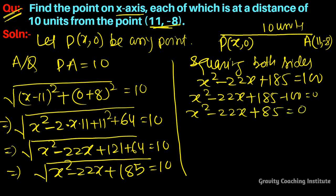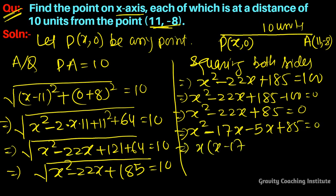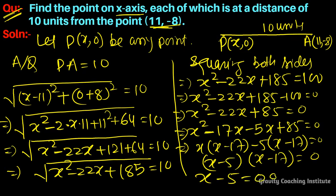x² - 22x + 185 = 100. So x² - 22x + 85 = 0. Now we'll split the middle term by factoring: (x - 5)(x - 17) = 0. So x - 5 = 0 or x - 17 = 0.